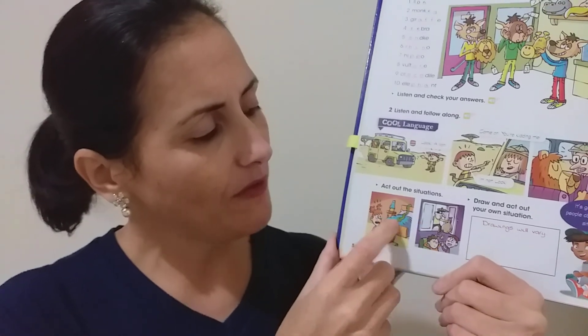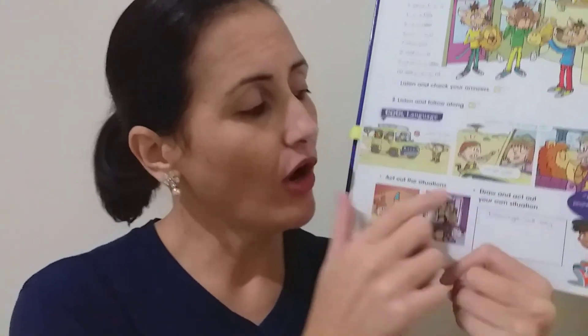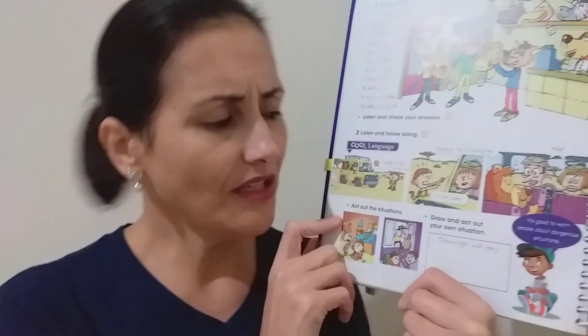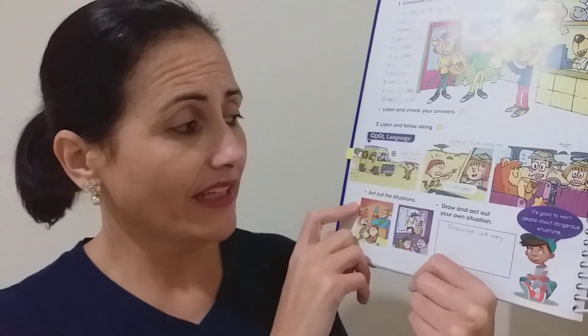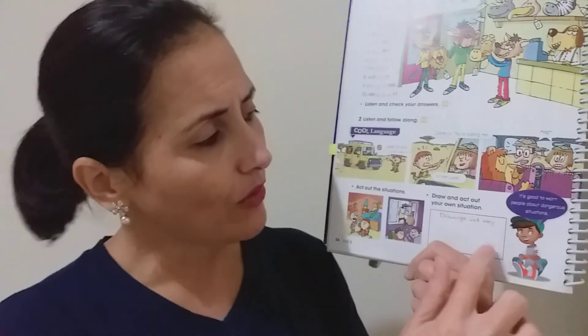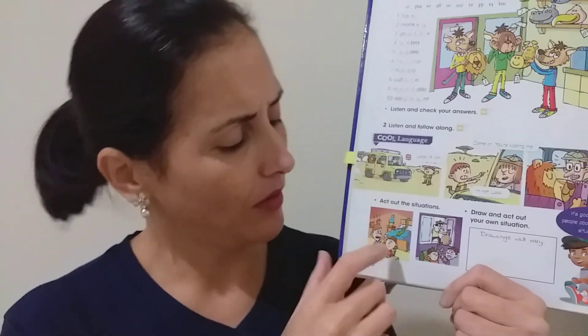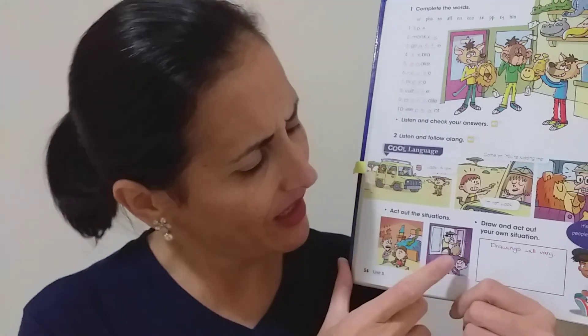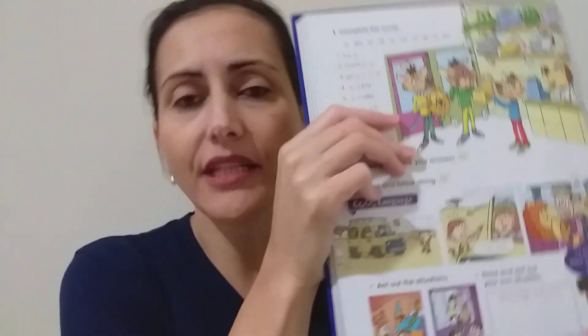Act out the situation. Você vai olhar nessas duas situações que estão aqui e desenhar outra situação ao lado. Draw and act out your own situation. Aqui nós podemos ver que as pessoas estão em perigo — ele encontrou uma cobra, subiu na cama, misericórdia! E aqui, um ladrão entrando. Nós podemos ajudar as pessoas mostrando as situações que estão em perigo. Pense em uma situação de perigo que você poderia ajudar o seu amigo e draw — desenhe aqui abaixo.